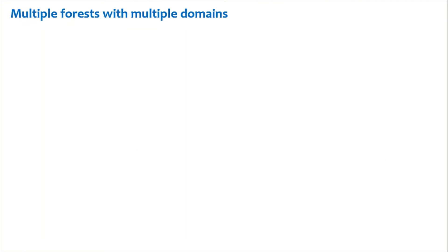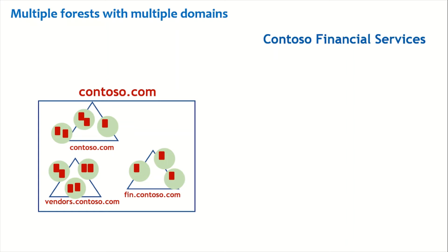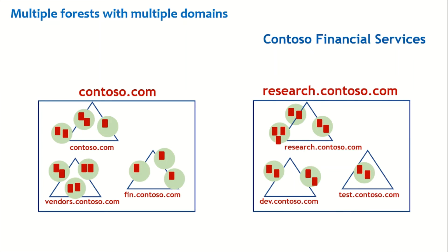The next design model is multiple forests with multiple domains. Contoso Financial Services has contoso.com as a forest with three domains: contoso.com, vendors.contoso.com, and fin.contoso.com, with multiple sites and domain controllers. They also have another forest named research.contoso.com with multiple domains: dev.contoso.com, test.contoso.com, and research.contoso.com. Some organizations go with this multiple forests with multiple domains architecture.